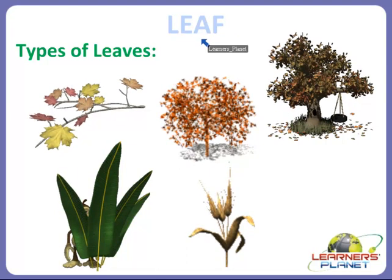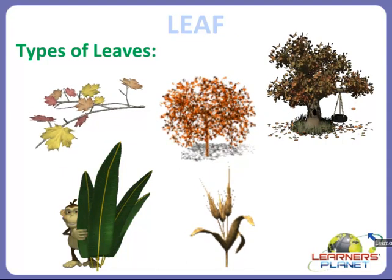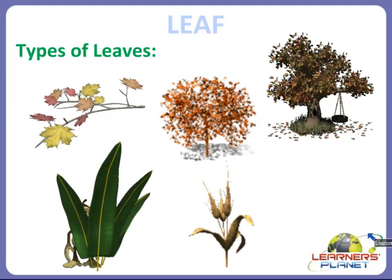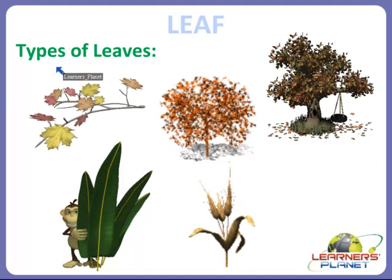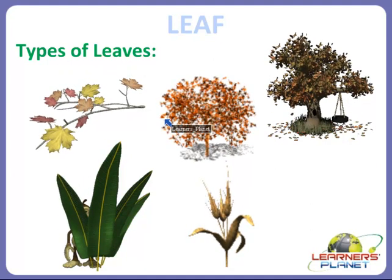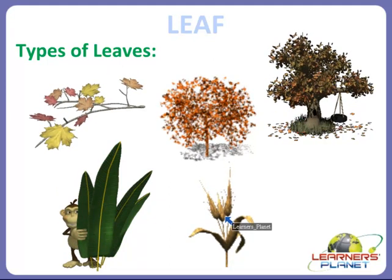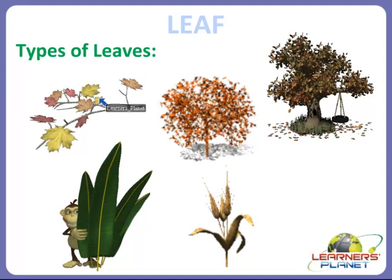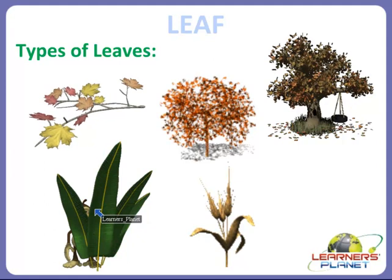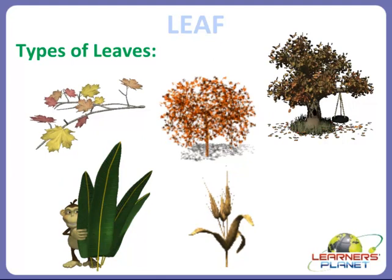What is actually a leaf? It is a part of the plant which helps the plants to make food. Now we will see different types of leaves. Different plants have different types of leaves. As you can see in the picture, there are so many different types of plants, and all the plants have different types of leaves.